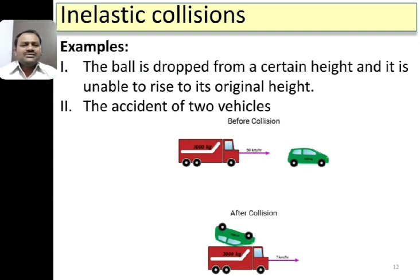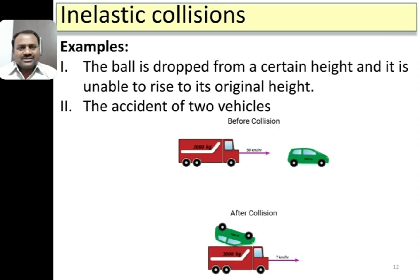For examples of inelastic collision: a ball dropped from a certain height that is unable to rise back to its original height — the total momentum may be conserved, but the kinetic energy is not, so the ball does not return to the hand. Also, when an accident happens between two vehicles, the collision between those two objects can be taken as an example of inelastic collision.